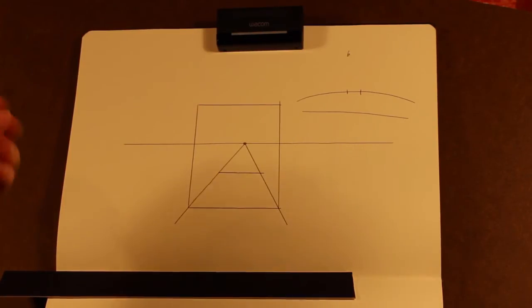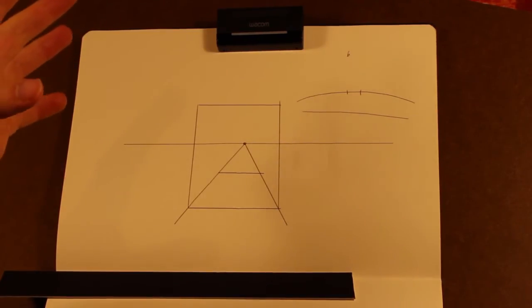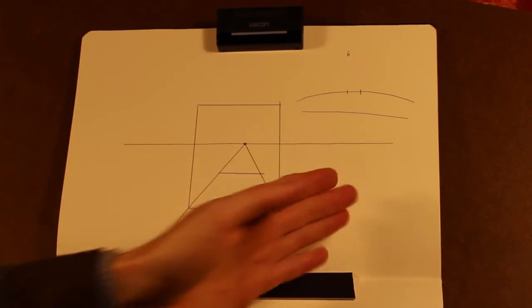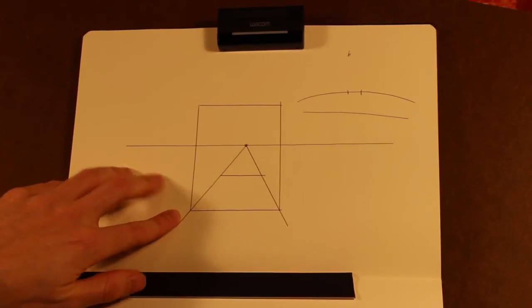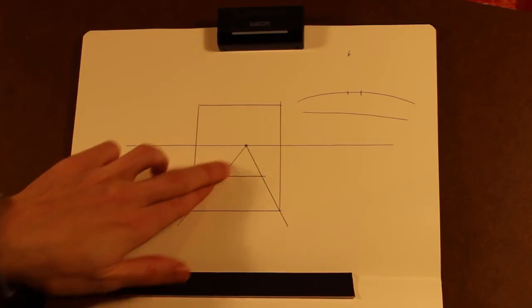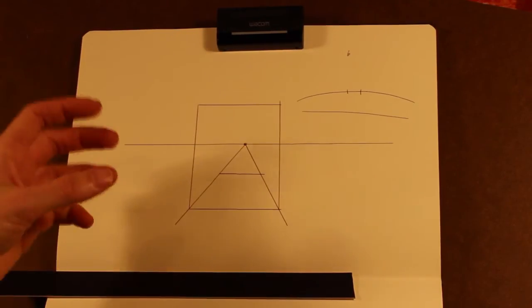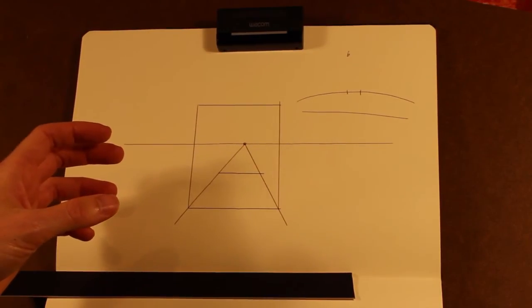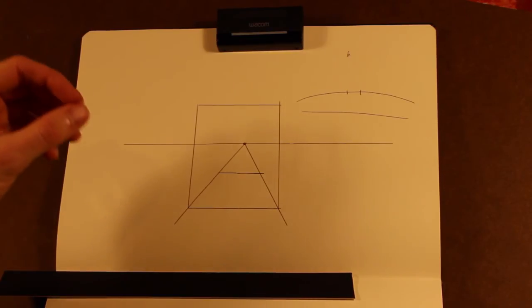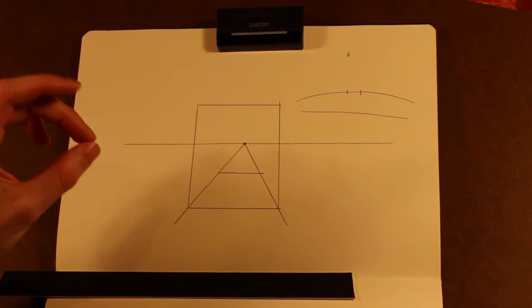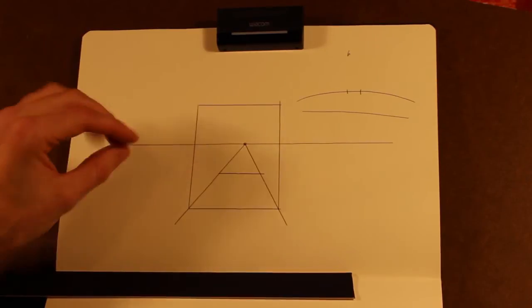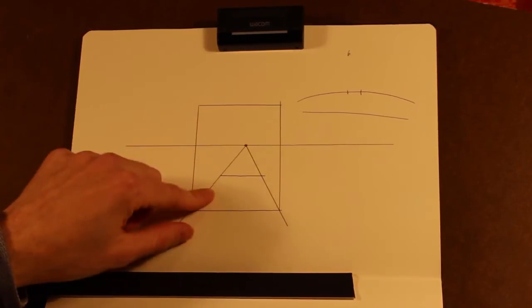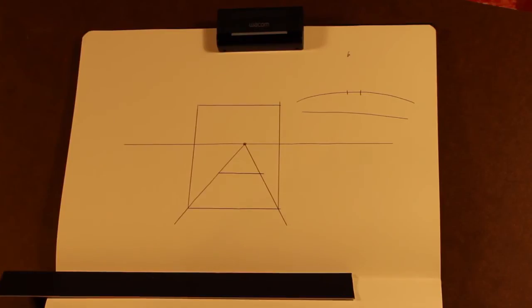So that's the difference between all the major types of perspective. So one point you have like one set of lines going towards the horizon line. And two point, you have two sets of lines, the original and another set. Three, you have the original, that second set and the third set. And I'll show you how that works a little bit later.